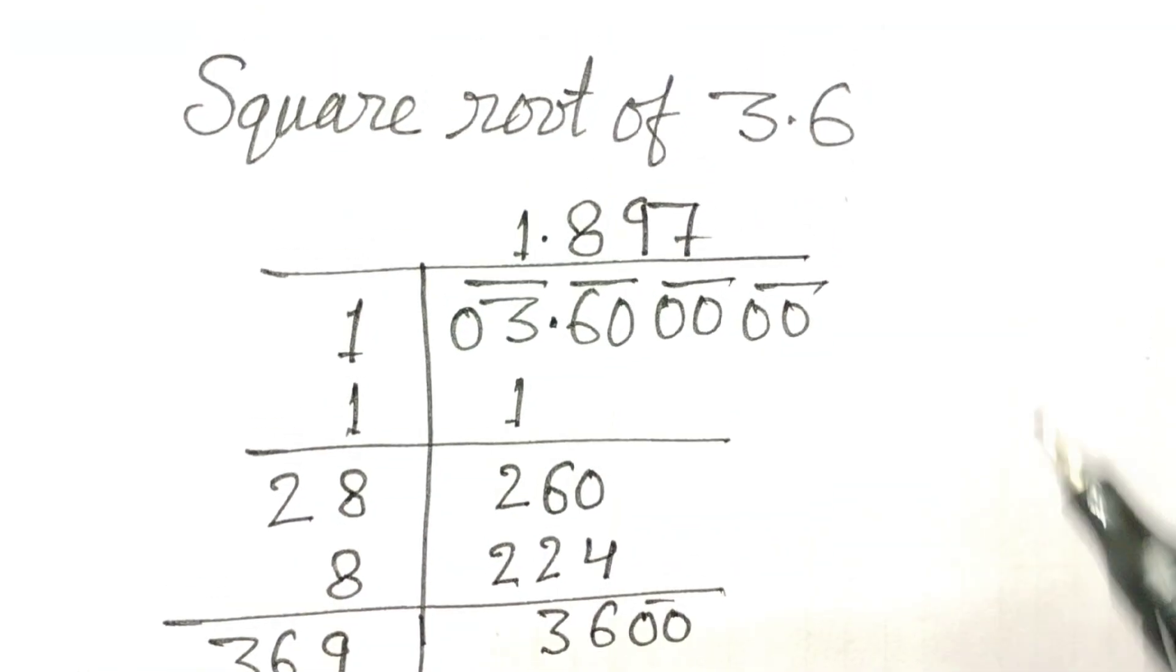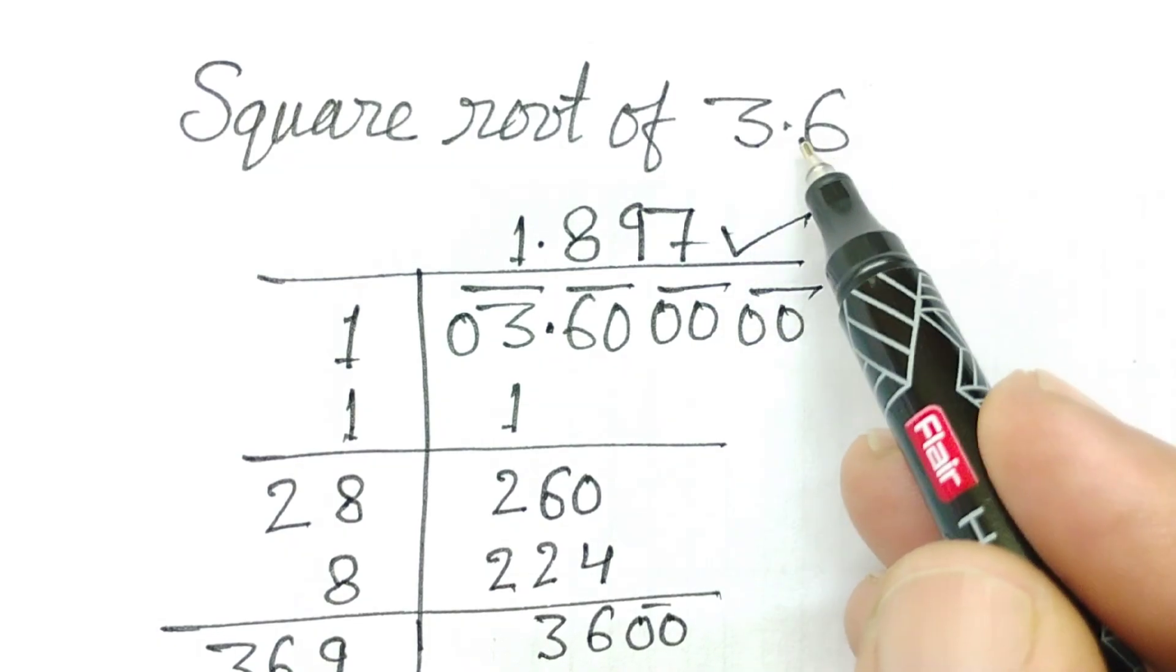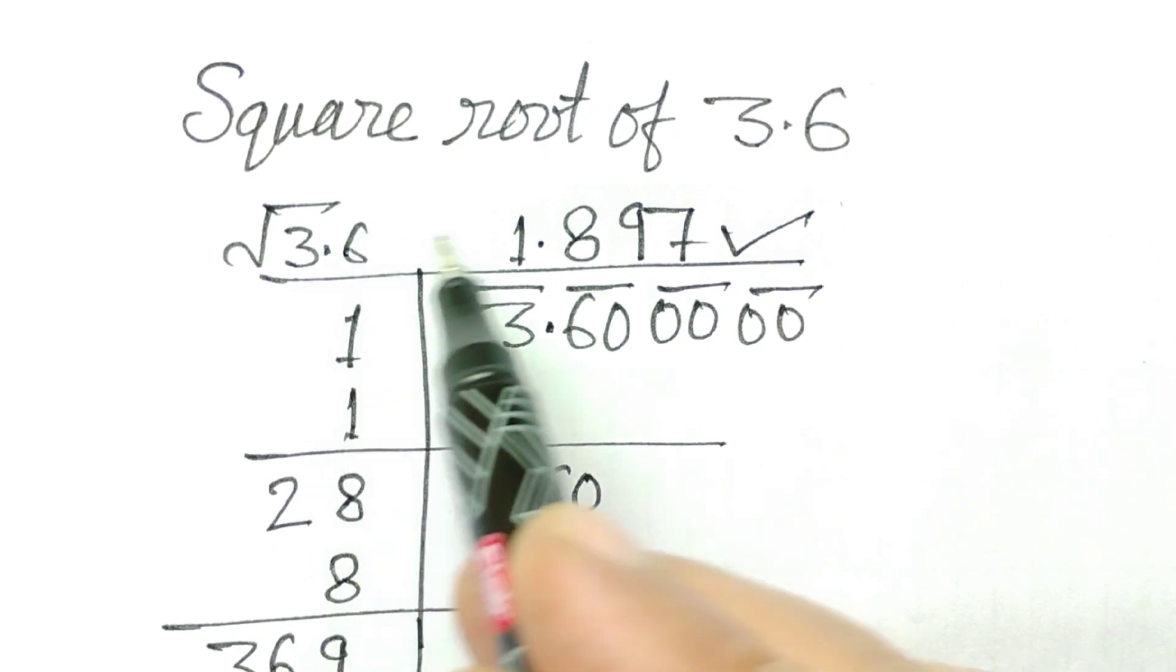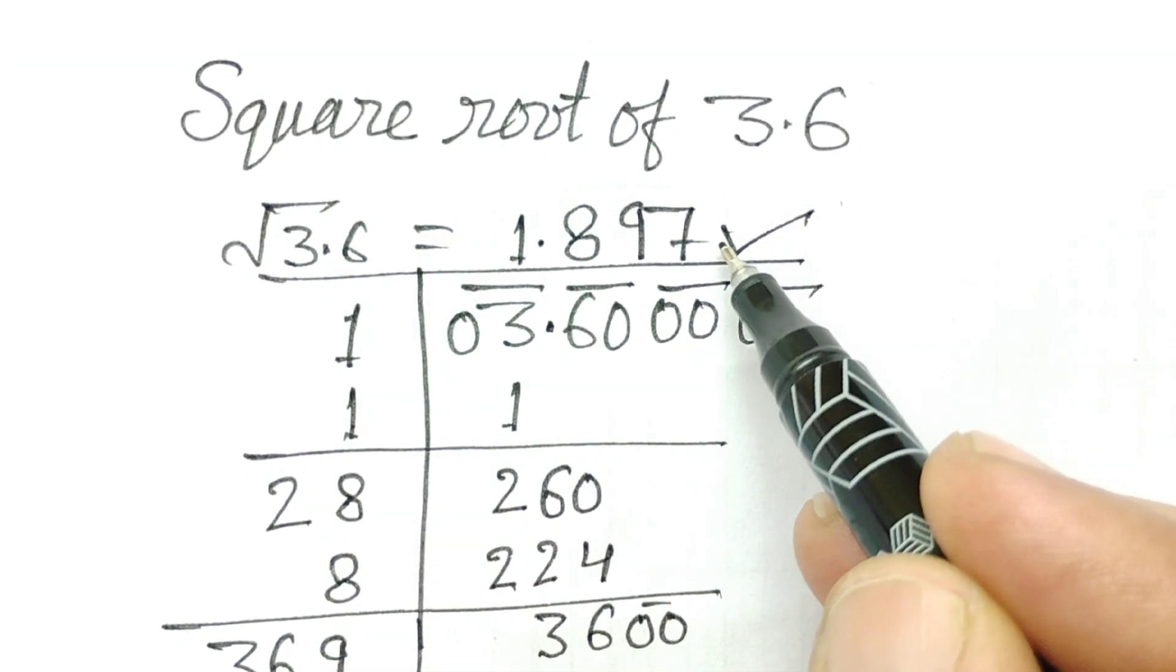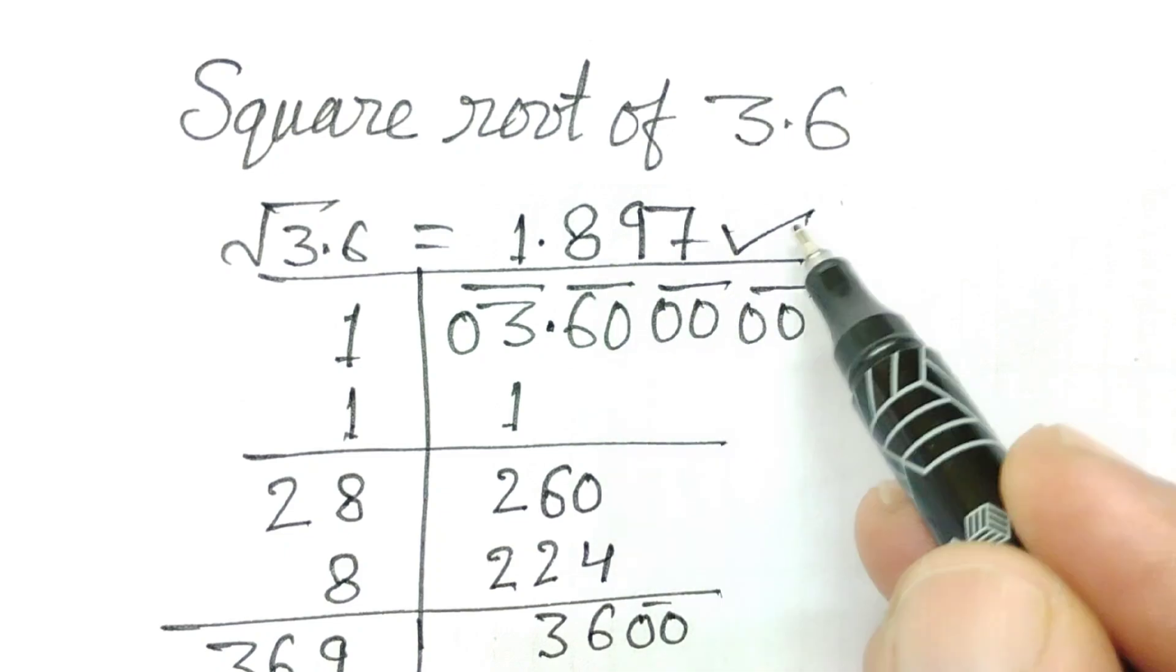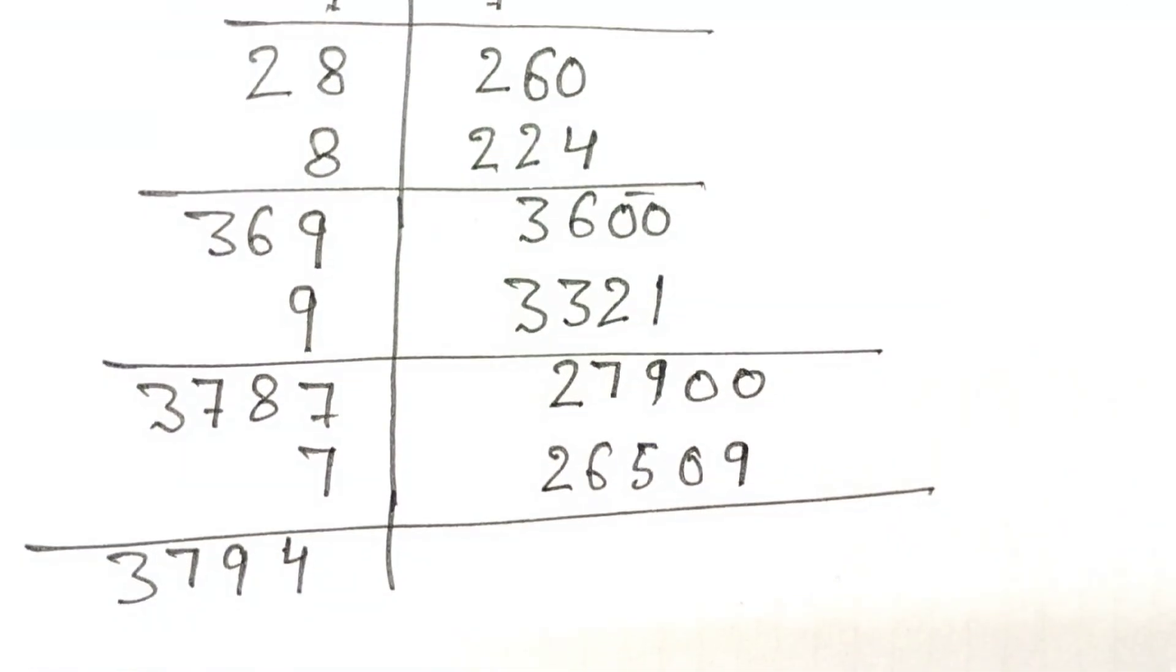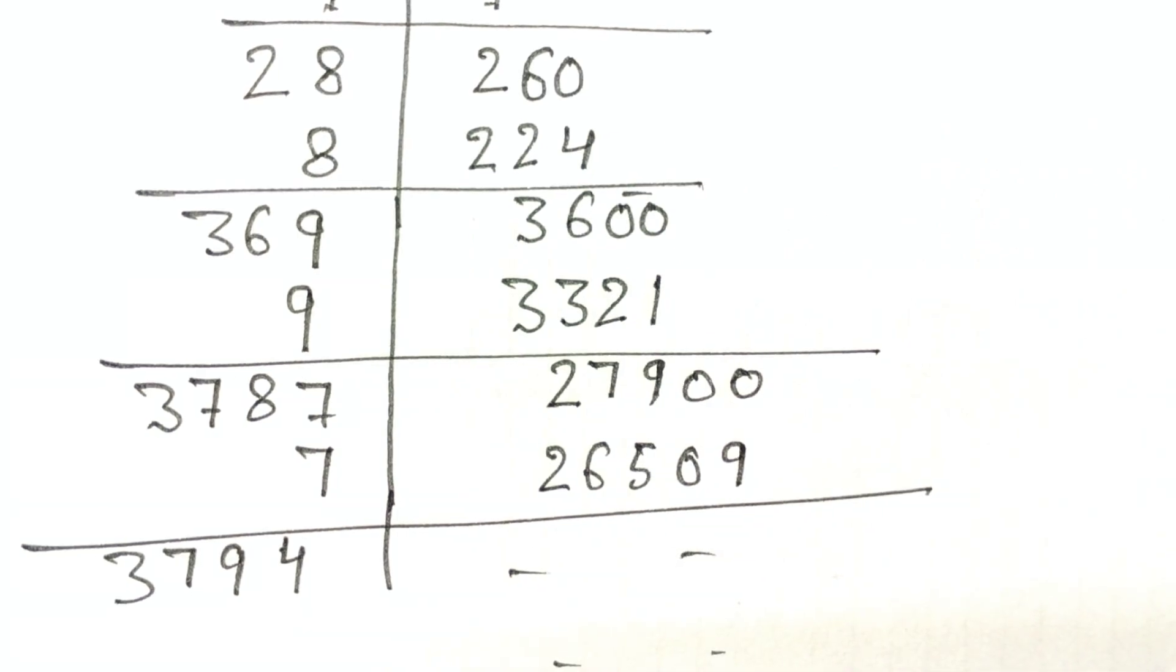Now, we have 3 place after decimal. Value of 3.6. Square root of 3.6 is equal to this. If we require more numbers after decimal, so we can go ahead. Okay friends, thank you.